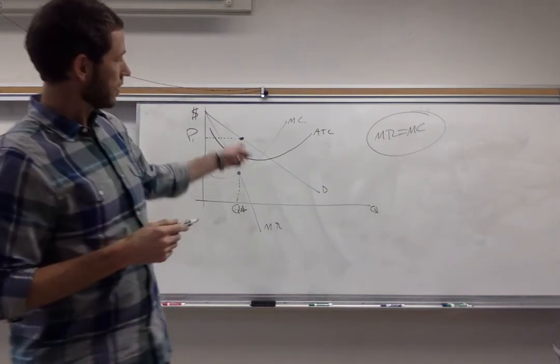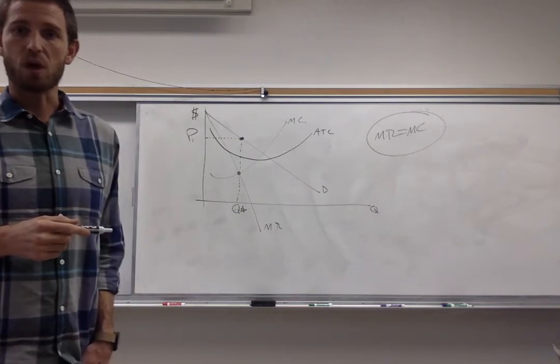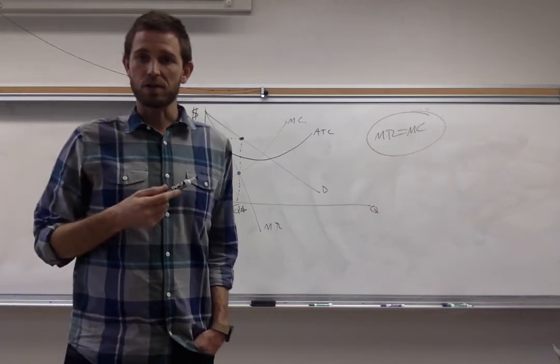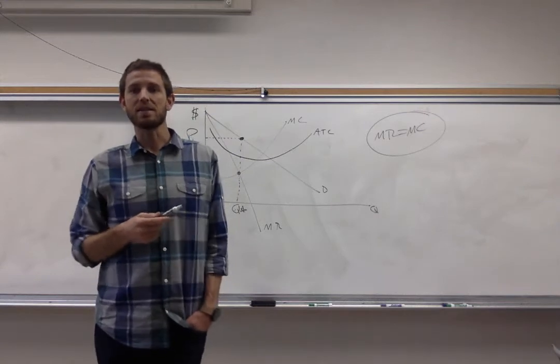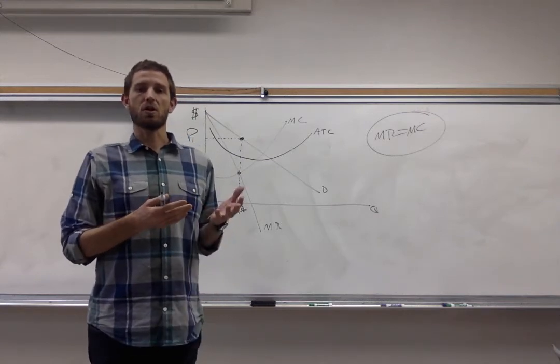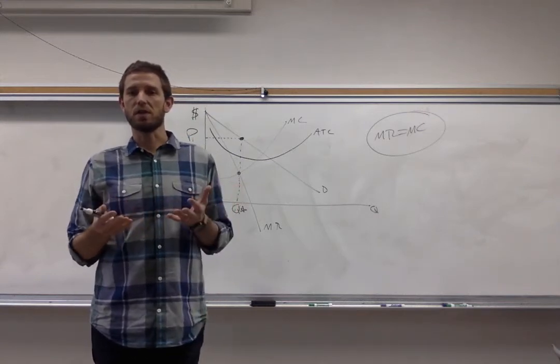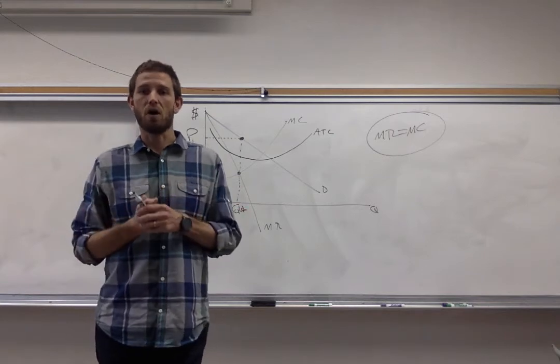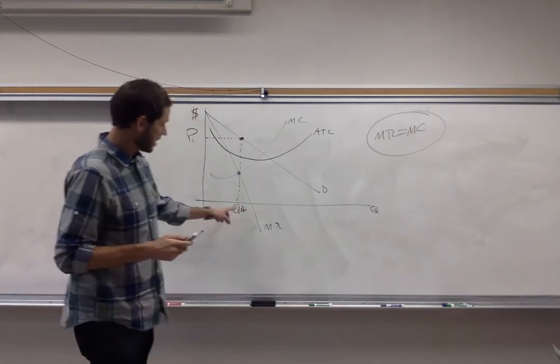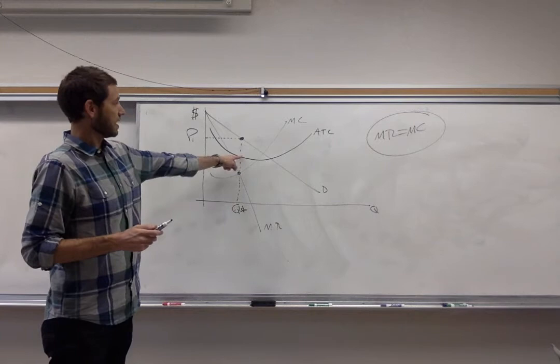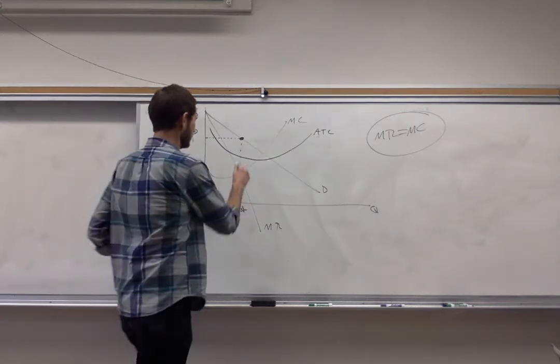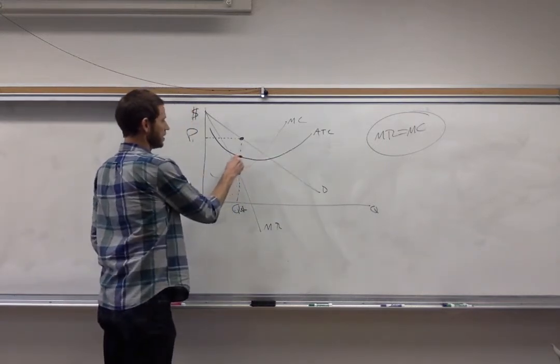Well we've got another curve that's going to be useful for us. That's the average total cost curve. Average total cost or ATC shows you how much it costs this firm to make each and every unit on average. It's a per unit cost. So if you're making this many units, read up to the height of that average total cost curve. That will give you your per unit cost.